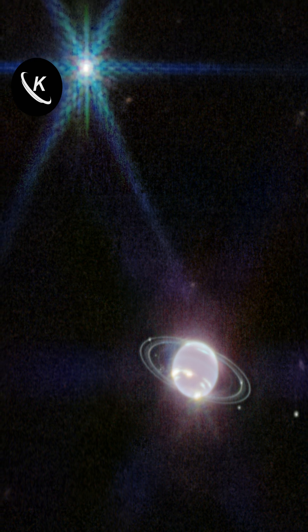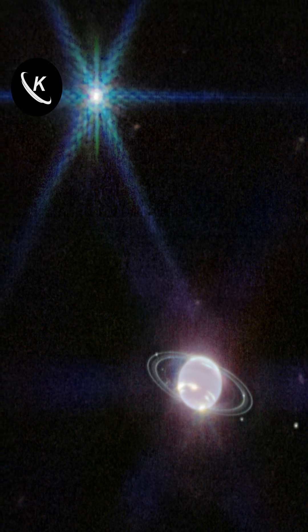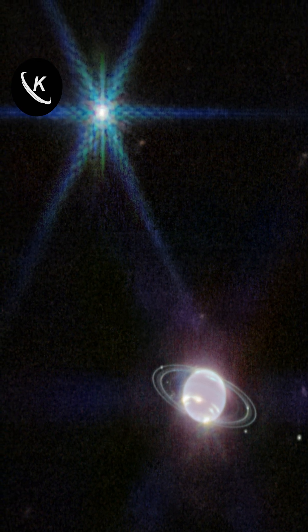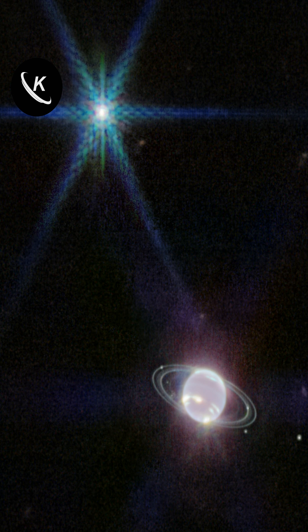And look who's shining brighter than a supernova at the upper left corner. It's Triton, the icy moon reflecting a whopping 70% of sunlight. Talk about stealing the spotlight.